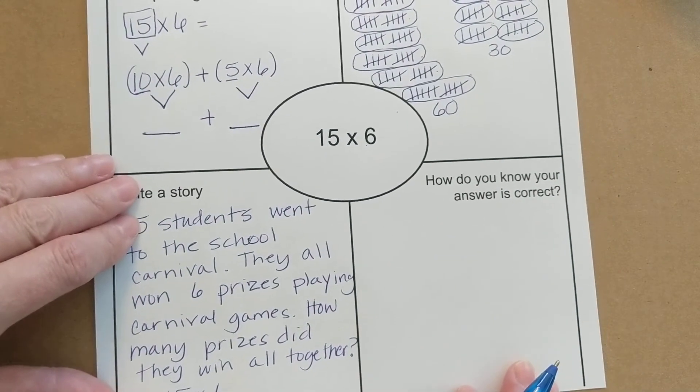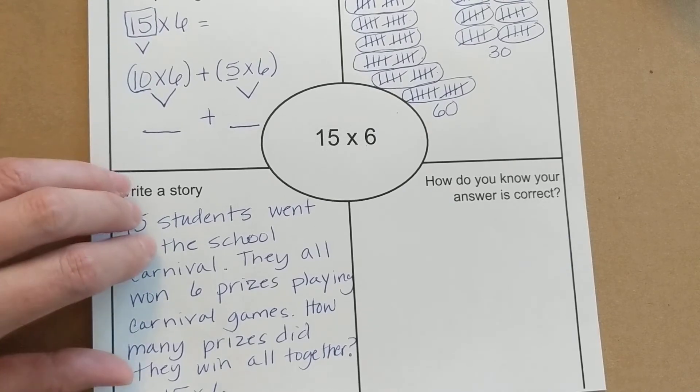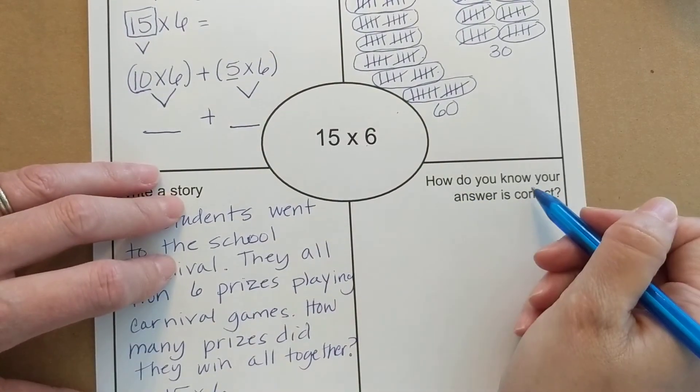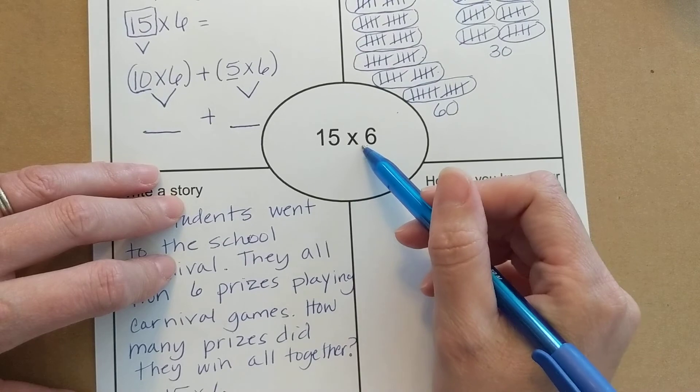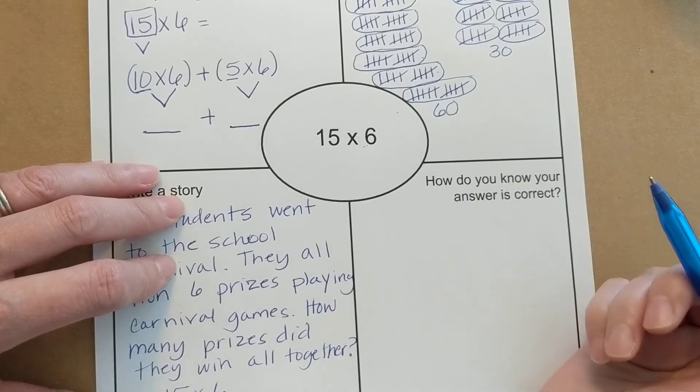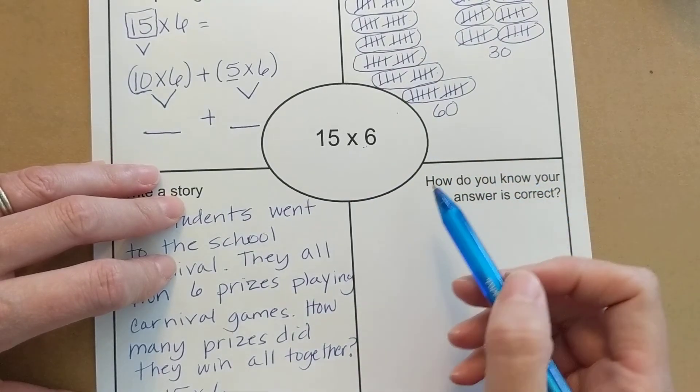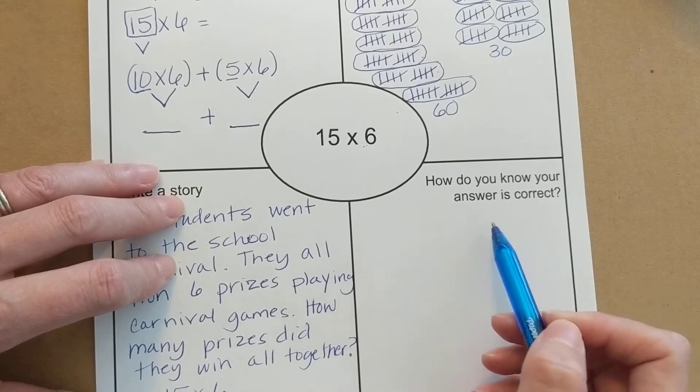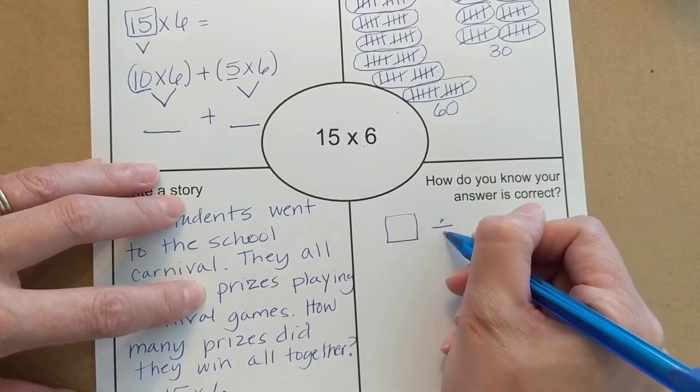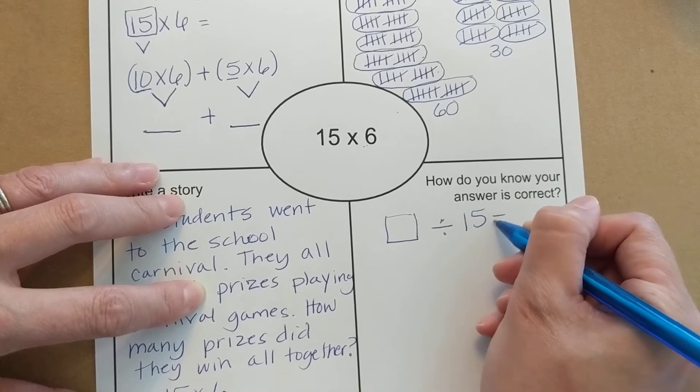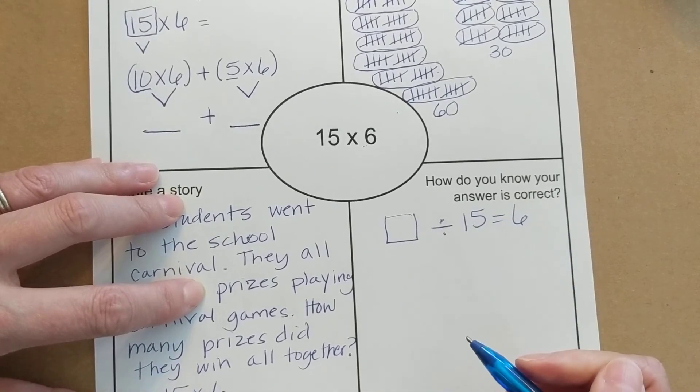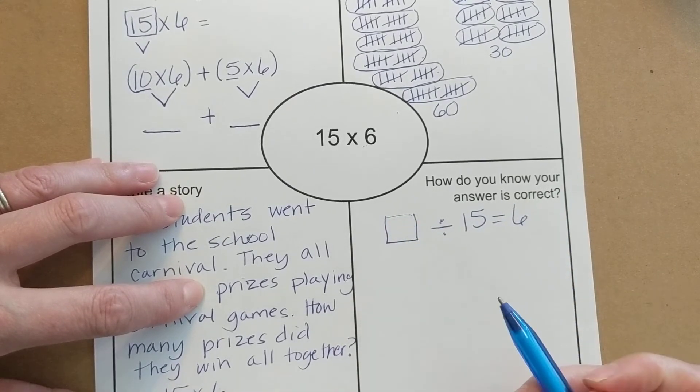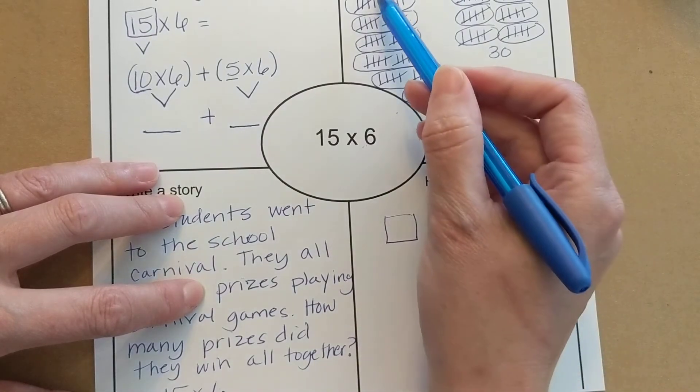How do I know my answer is correct? Well usually like multiplication you could use a fact family to solve your problem. You could do a division sentence: blank divided by 15 equals 6. That's one way you could solve it.